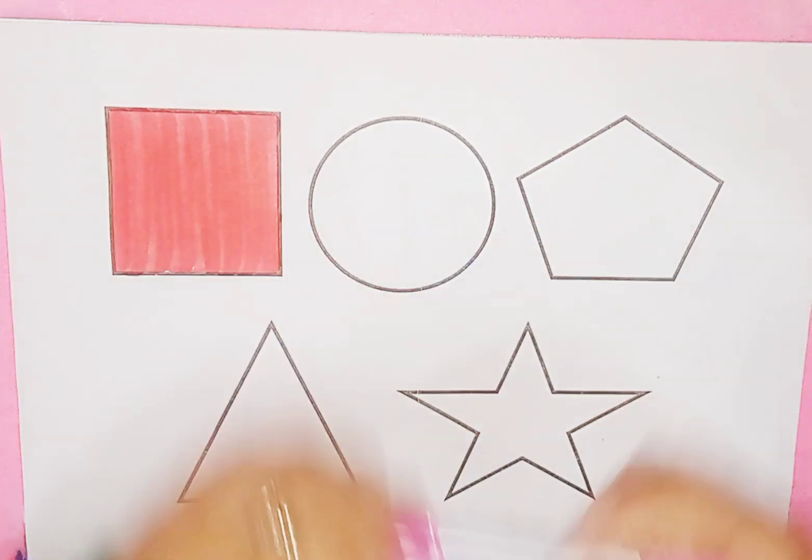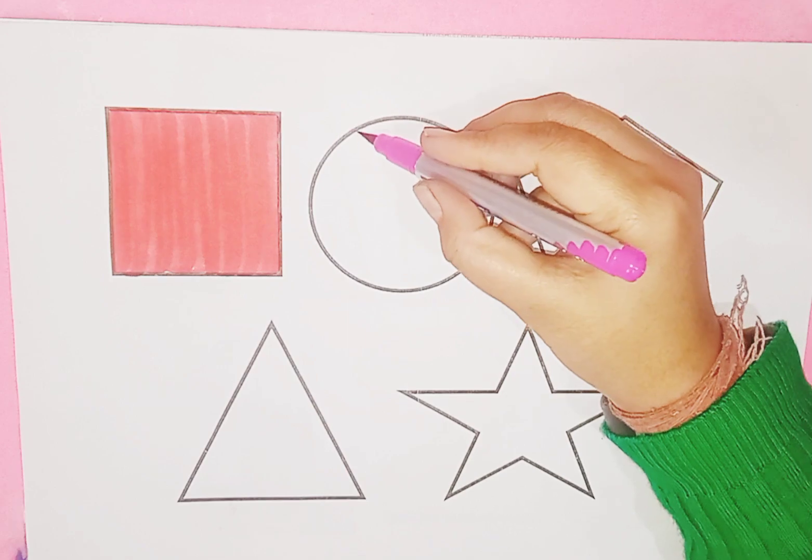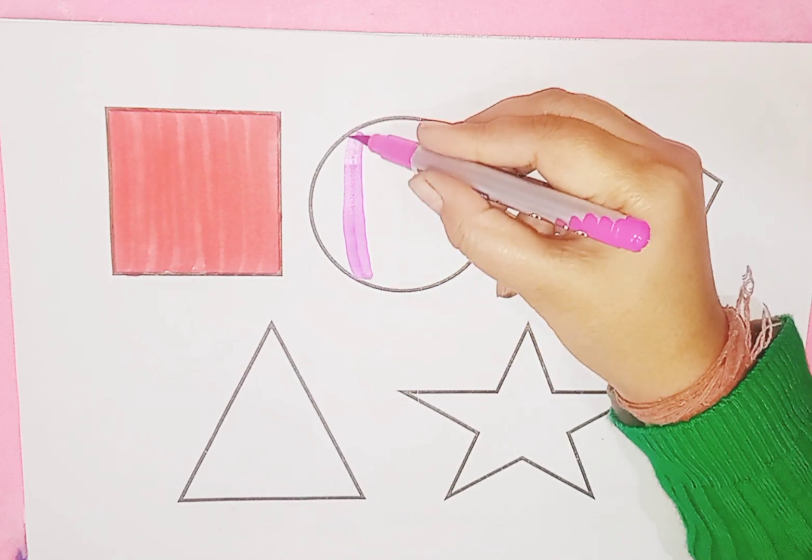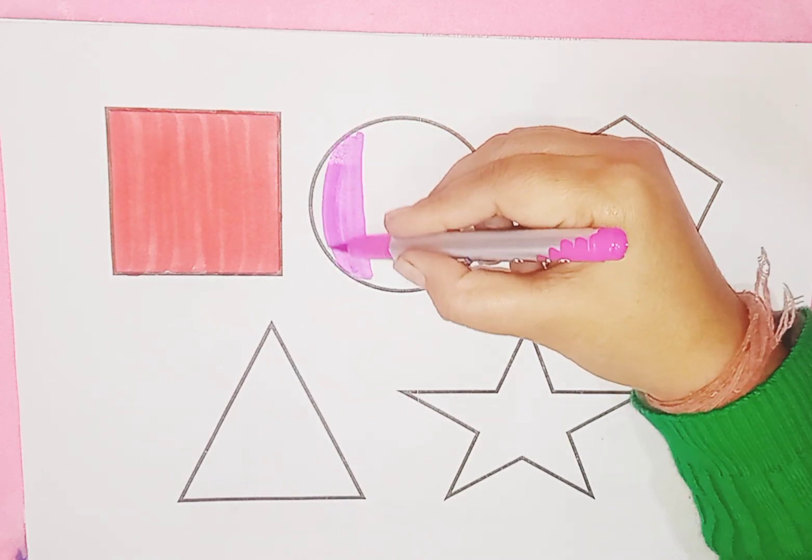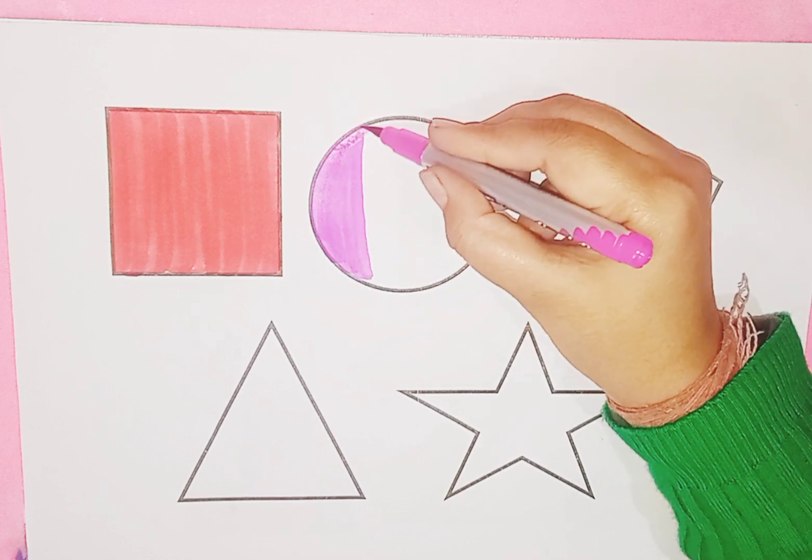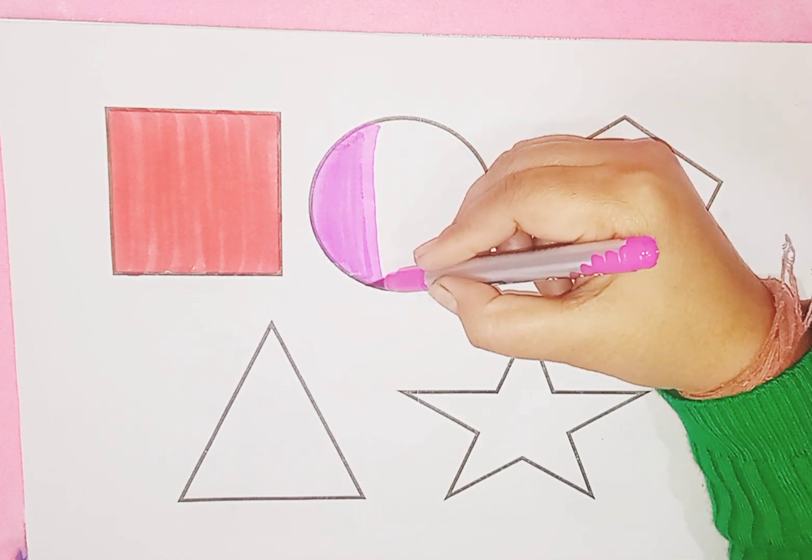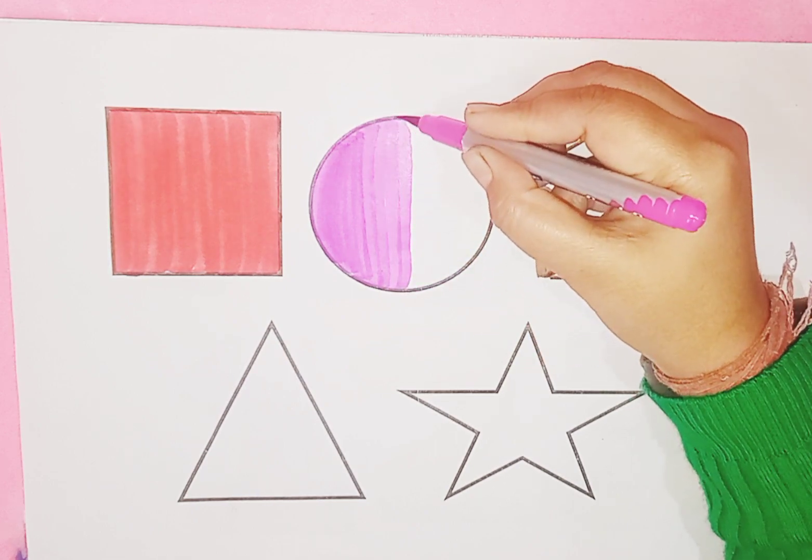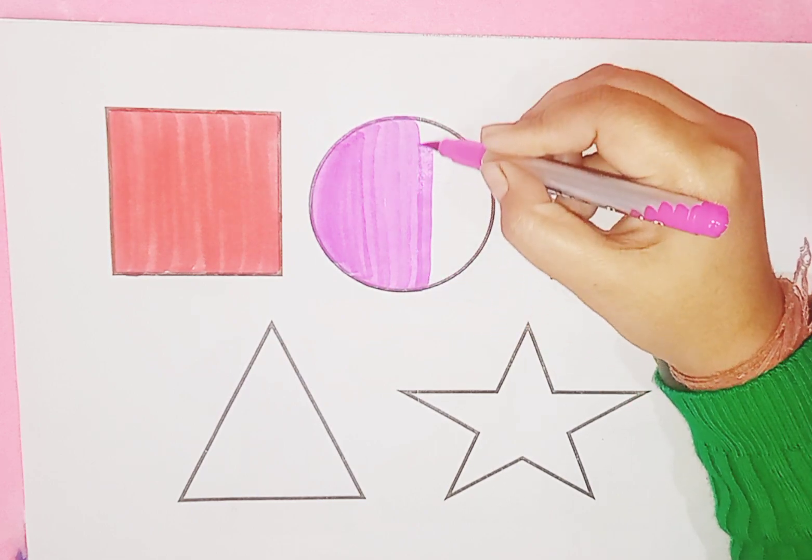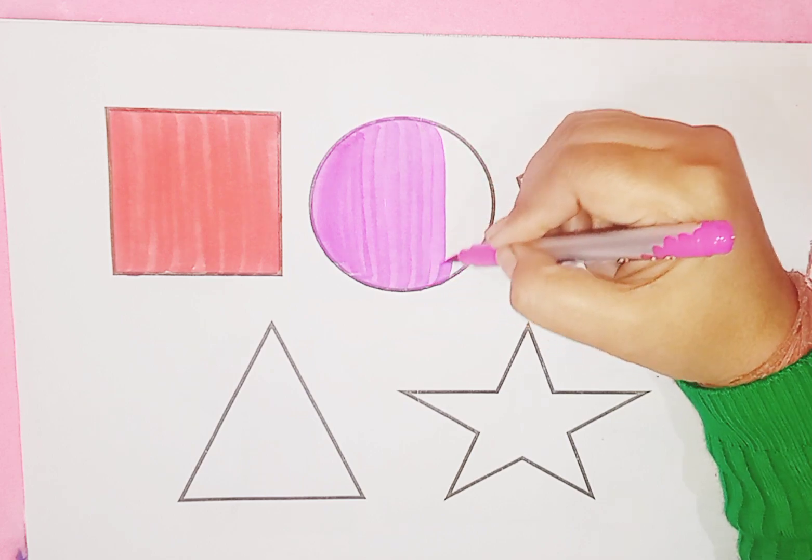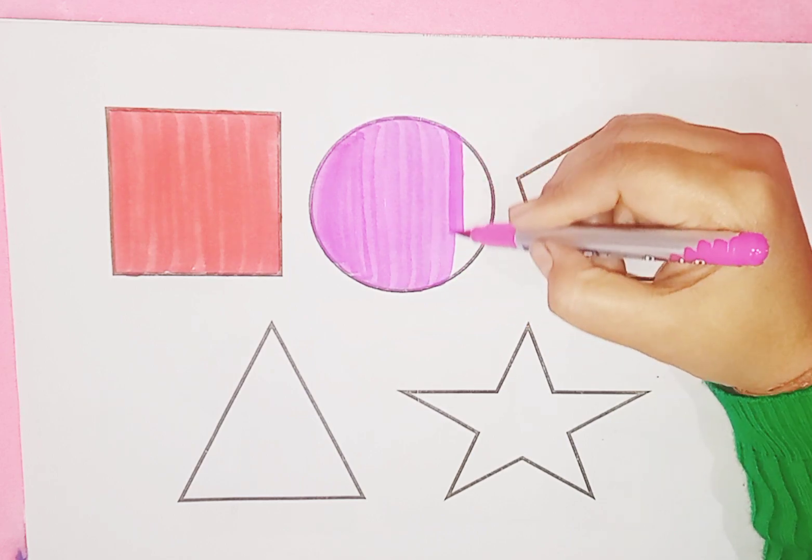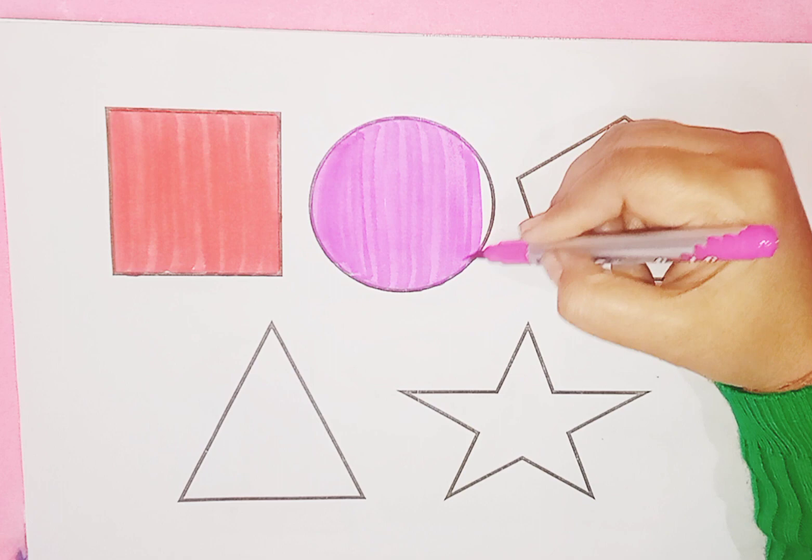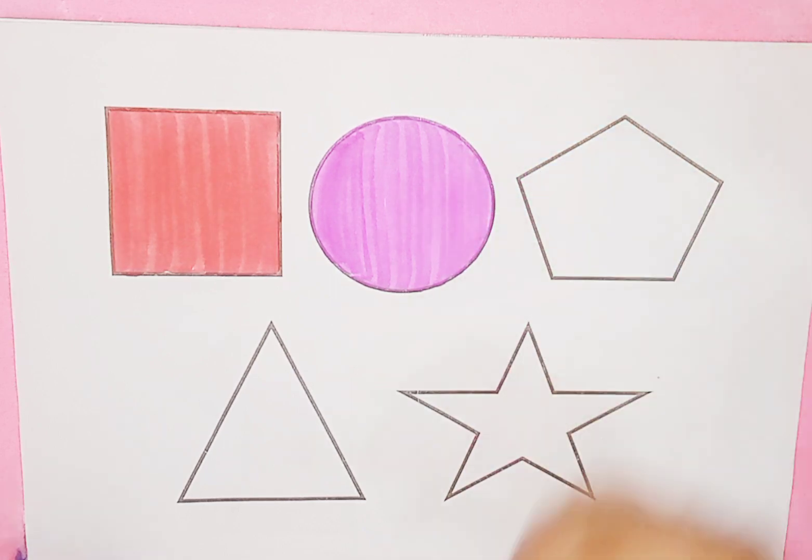Pink color, circle. Green color, purple color, blue color. Circle with pink color.